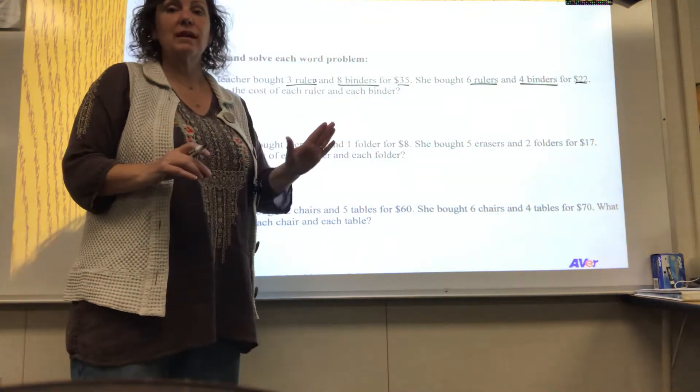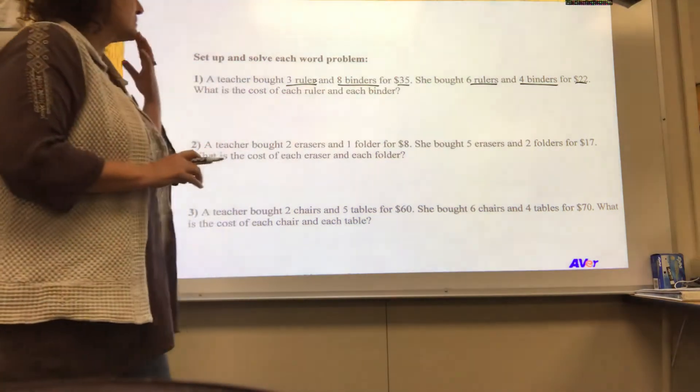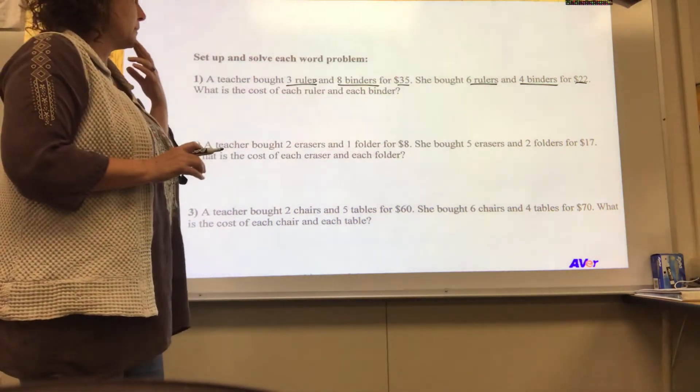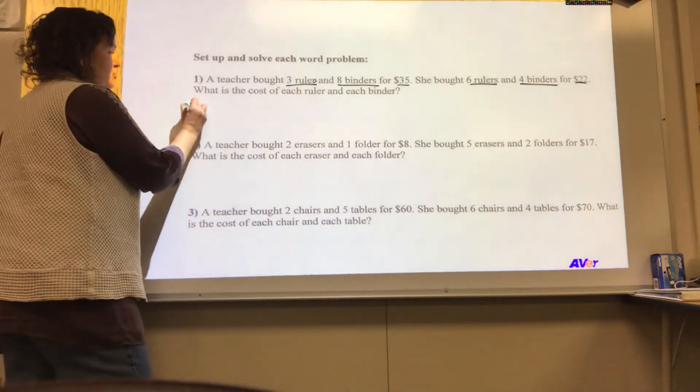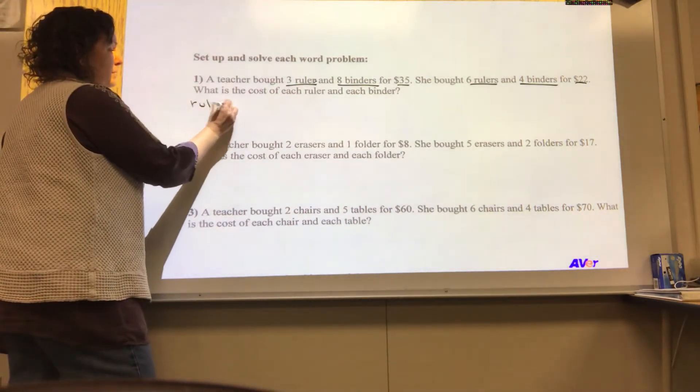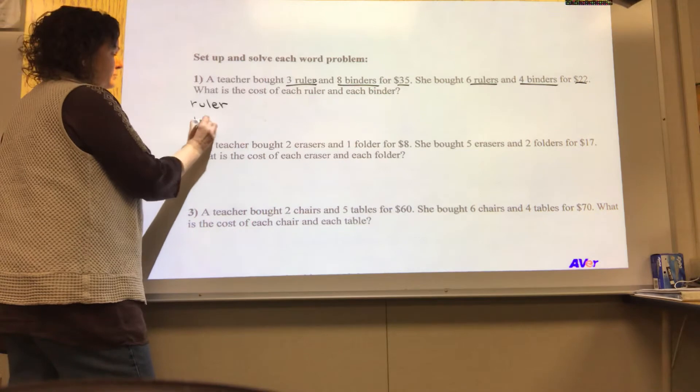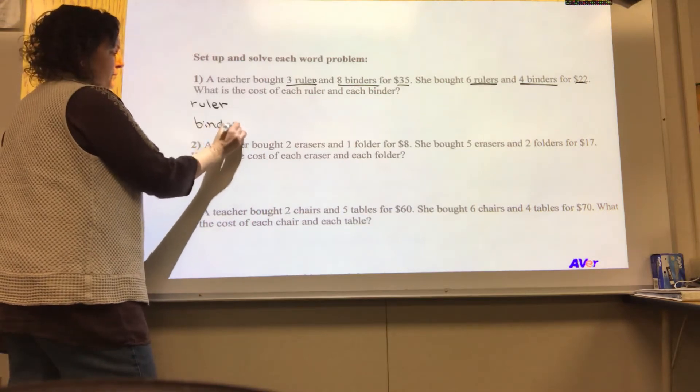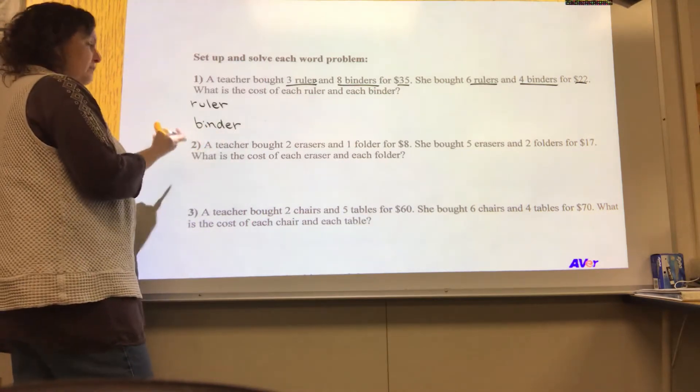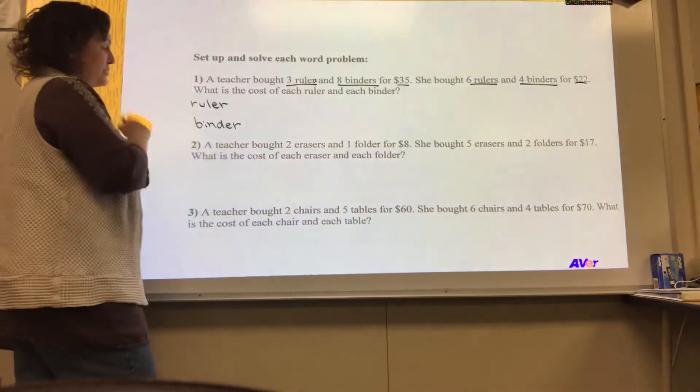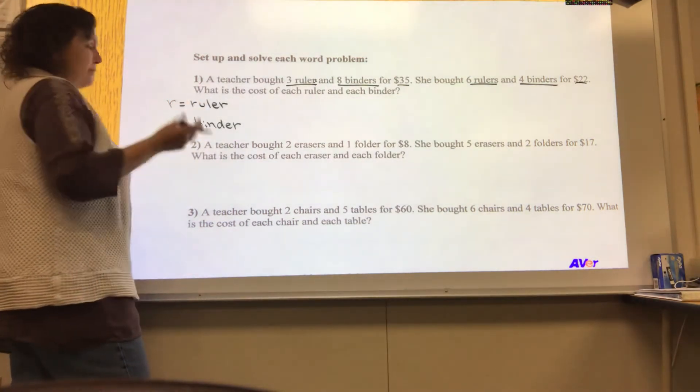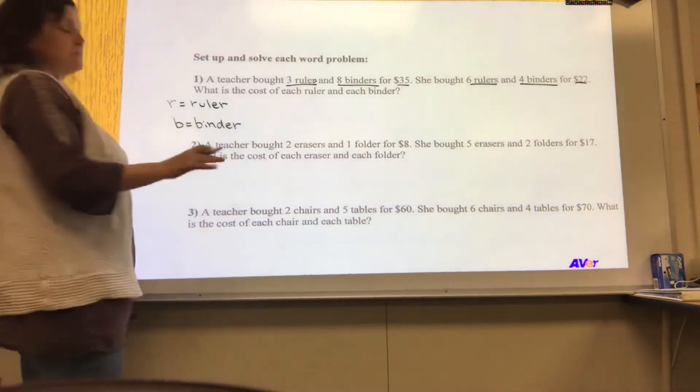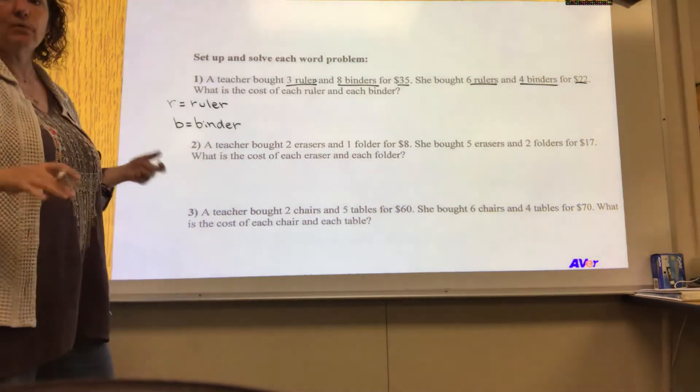Well, right now our focus is just setting this guy up. So let's see. What items are we talking about? Looks like rulers and binders. So the first thing I'm going to do is write down the important items. Ruler. Binder. Now I need a letter, a variable, that will stand for each one of these. Now, I go for Easy Breeze, Lemon Squeezy. R is a ruler. And B is a binder. I like that one.